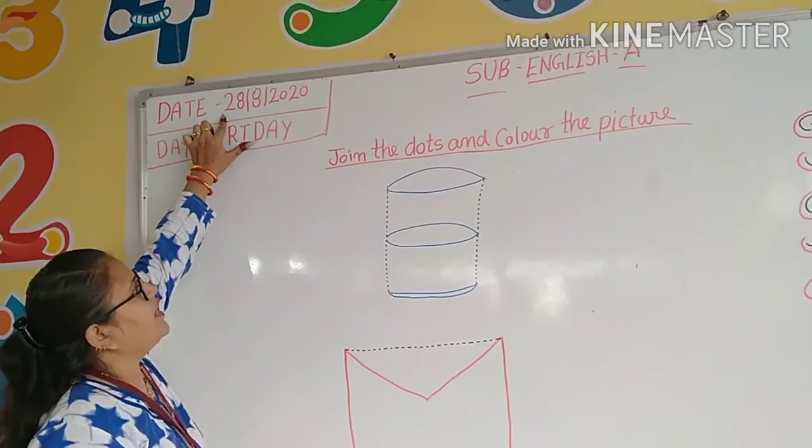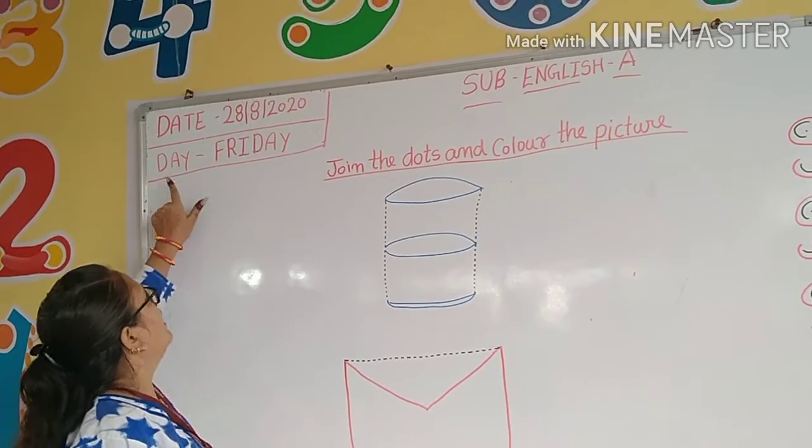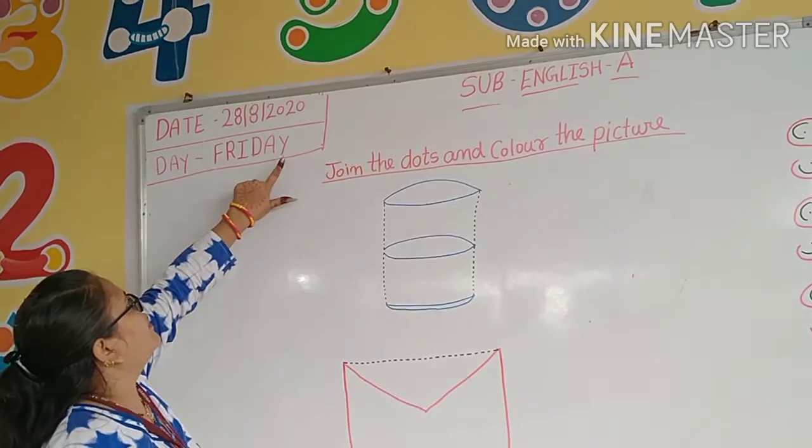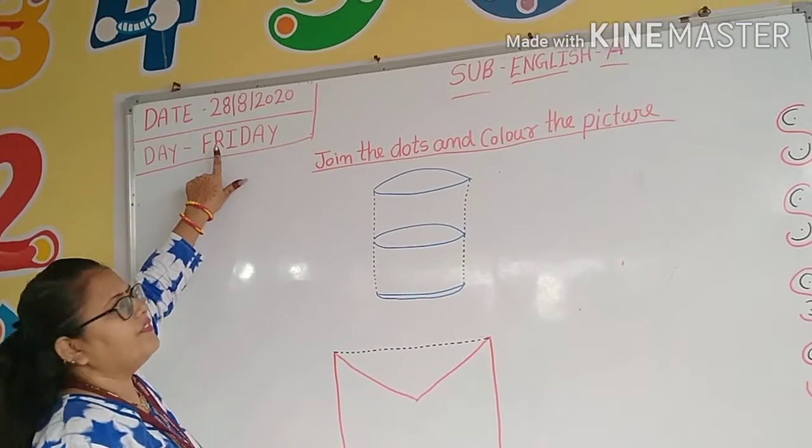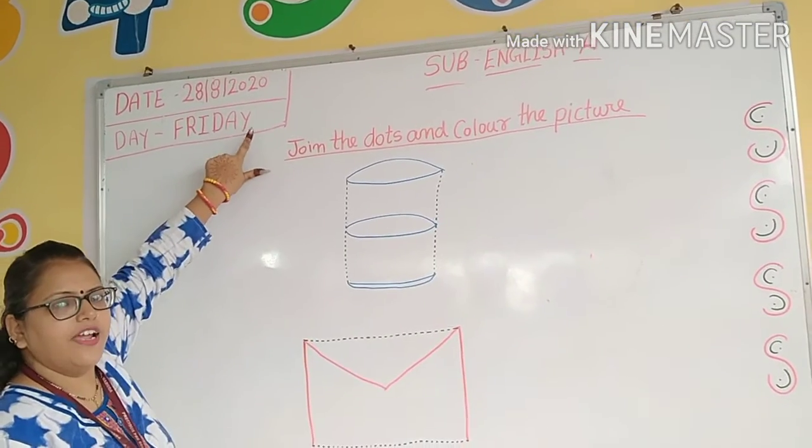Which date is today? 28th August 2020. Which day is today? Friday. Spelling of Friday: F-R-I-D-A-Y, Friday.